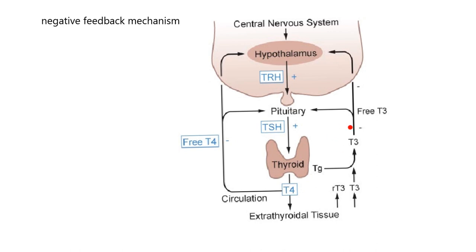On the other side of the diagram, we're looking at free T3. The minus signs indicate: stop producing or decrease production. Free, in both cases, means the hormone is not bound to a carrier protein like albumin or a specific carrier protein. Free hormone is biologically active. If it's bound to a protein carrier molecule, it's not biologically active.